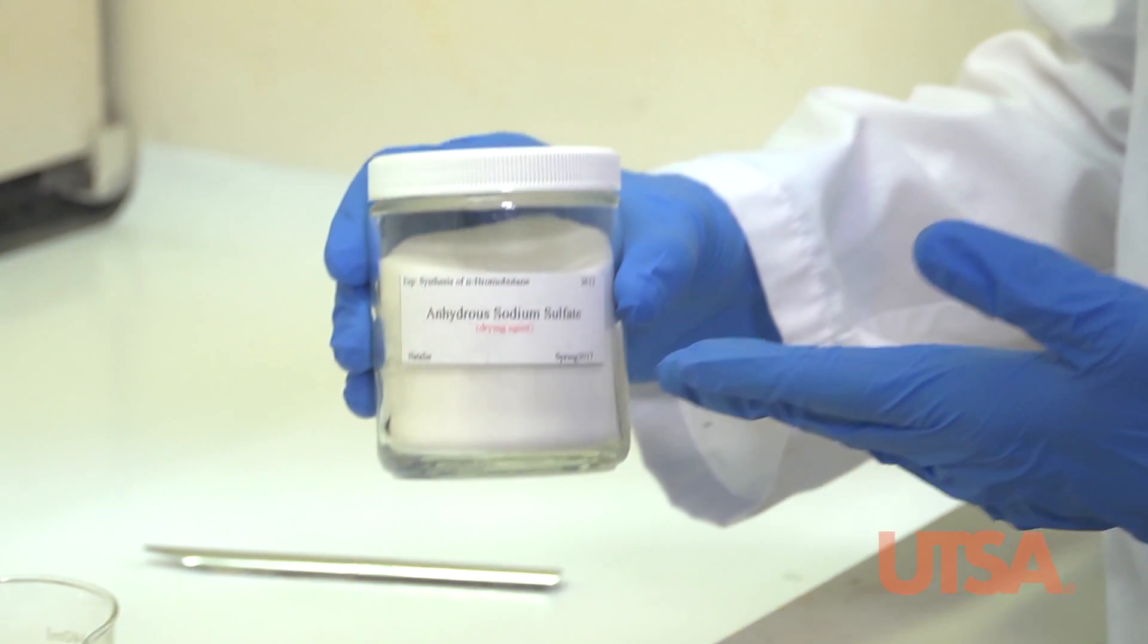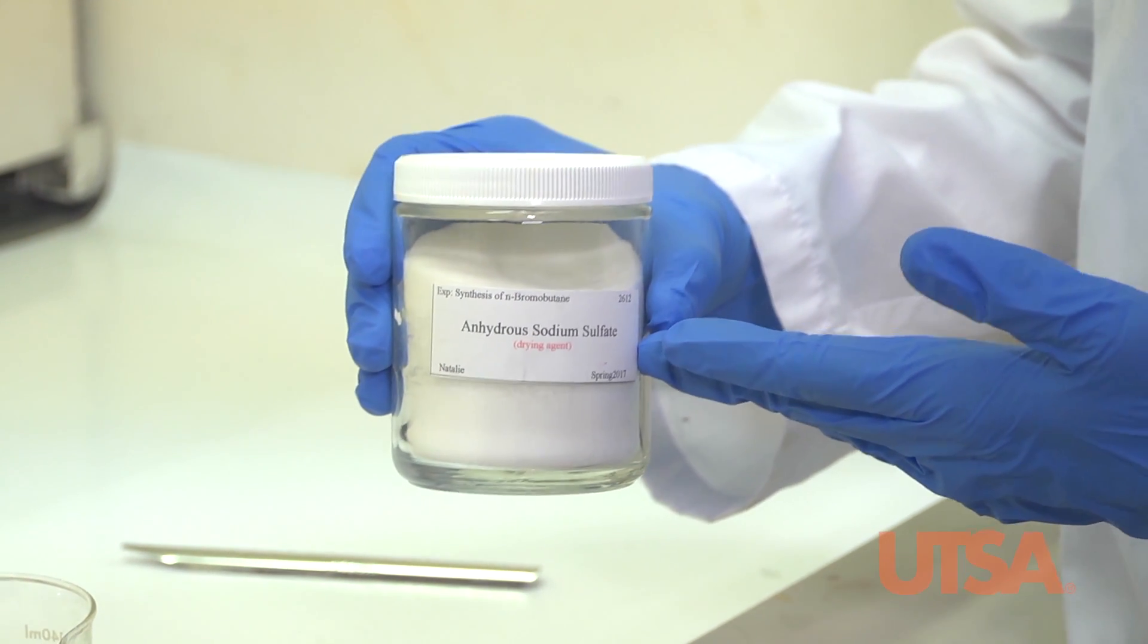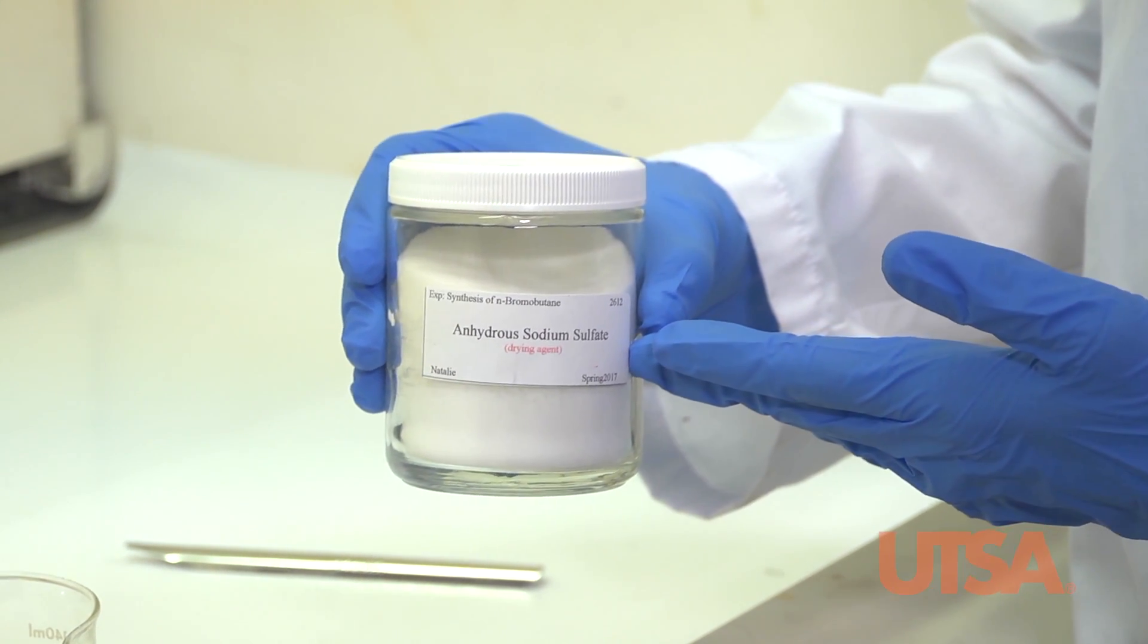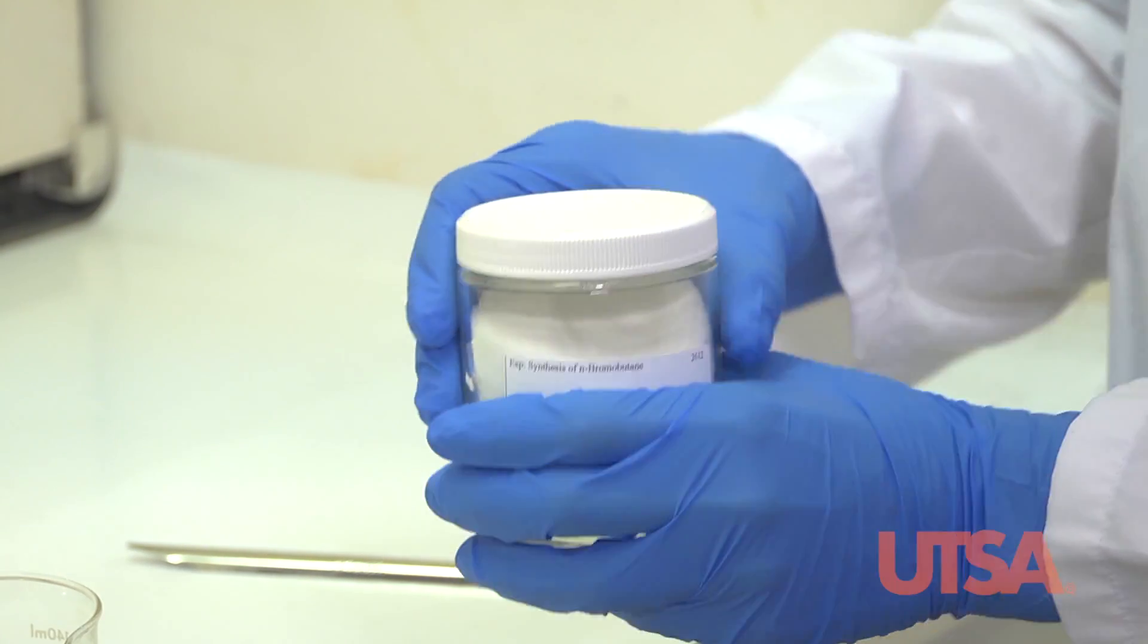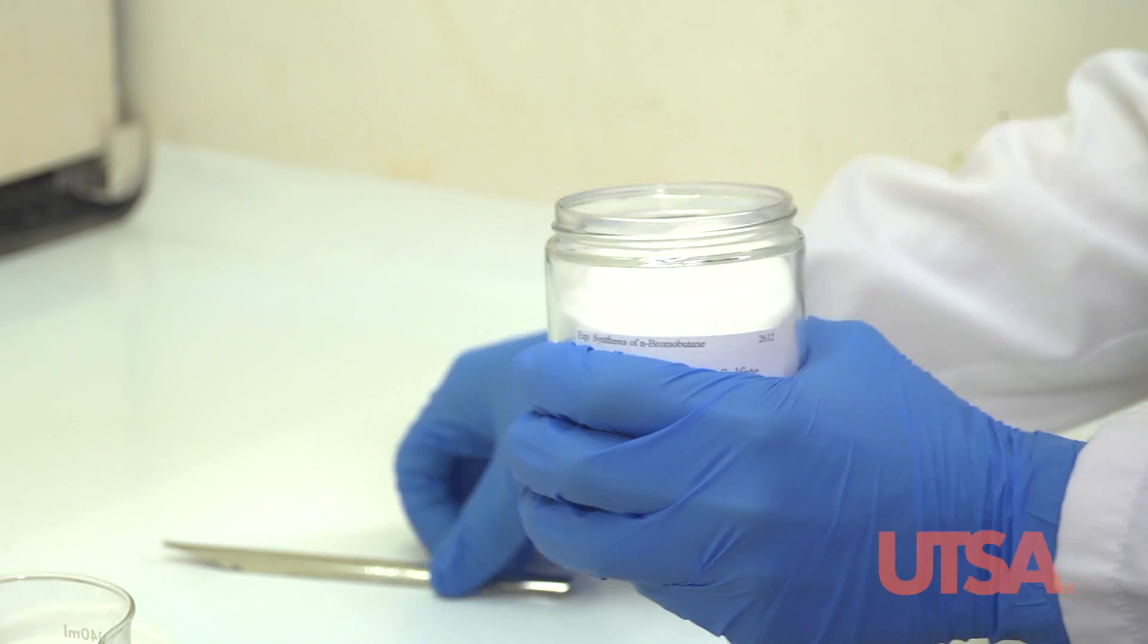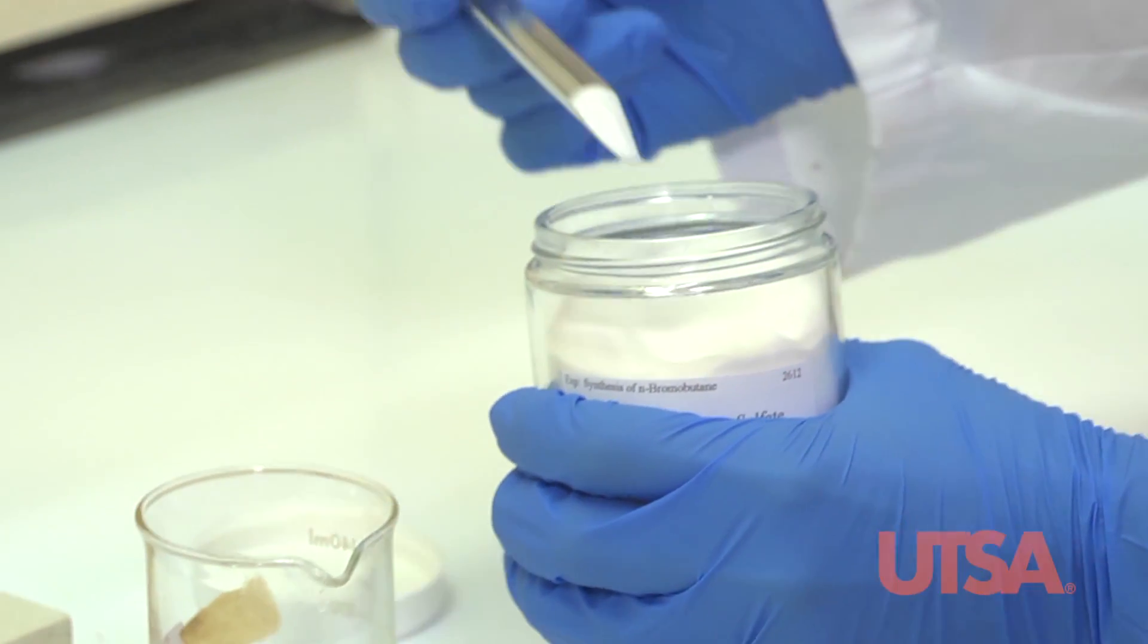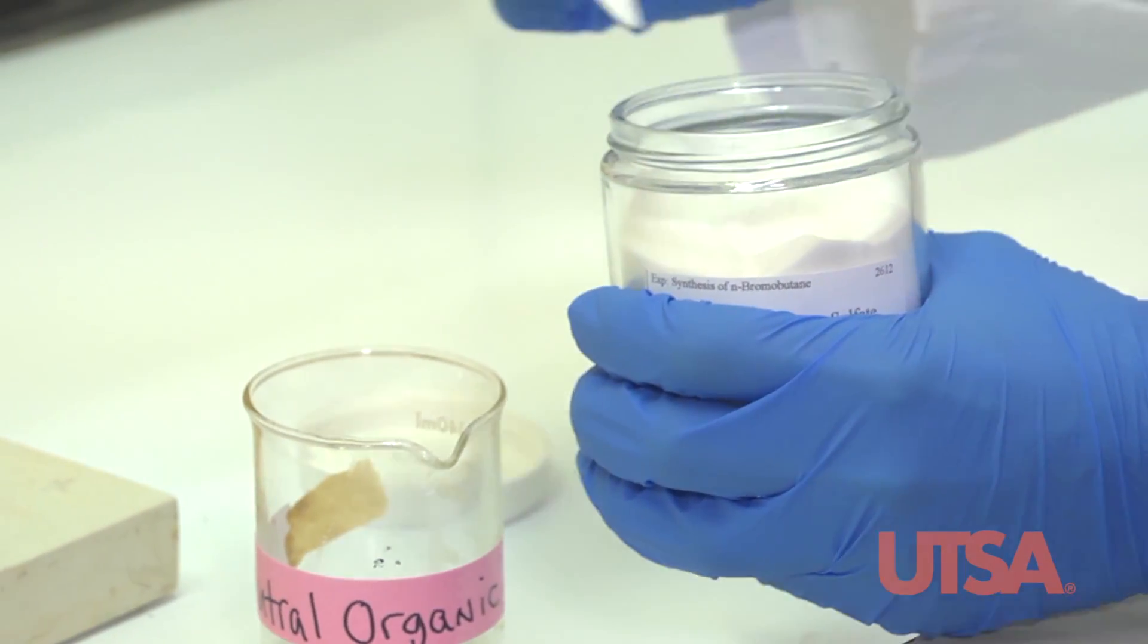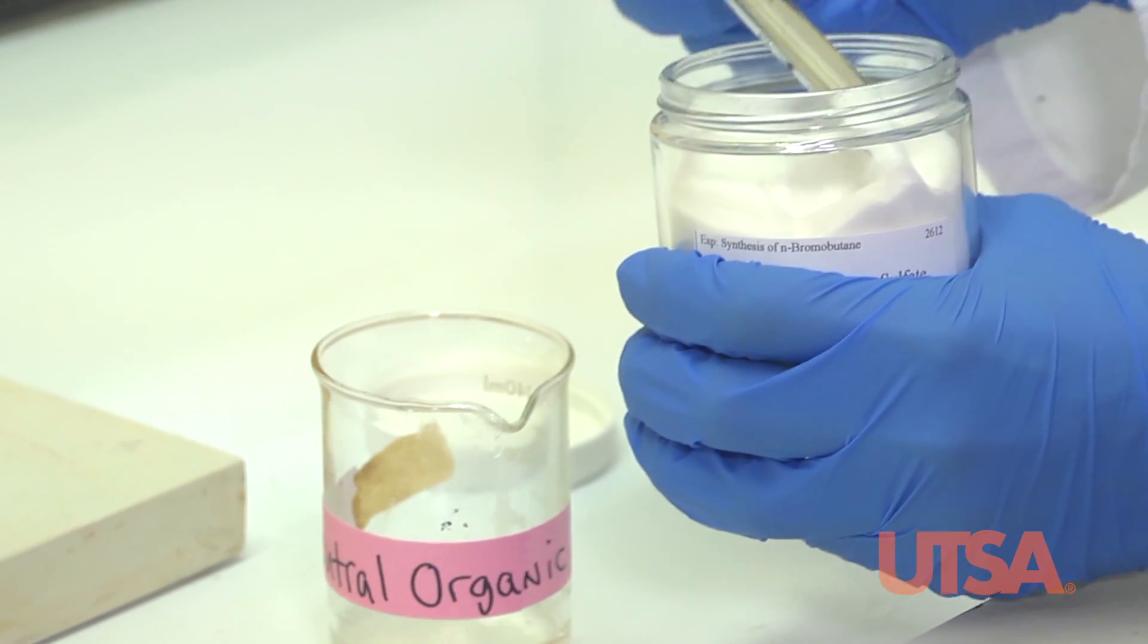Next I'll be adding anhydrous sodium sulfate to the organic layer to remove any water. Add the anhydrous sodium sulfate until there are no clumps visible.